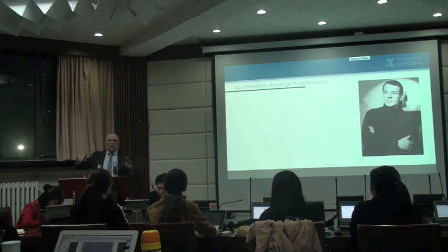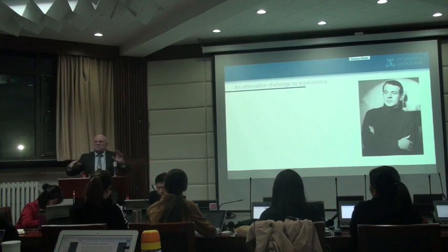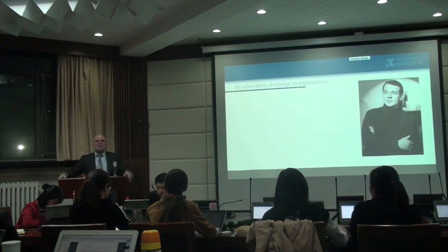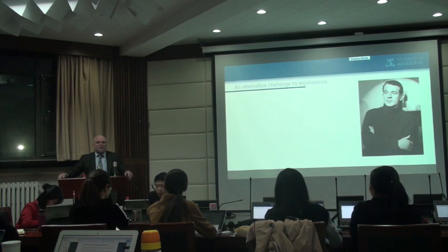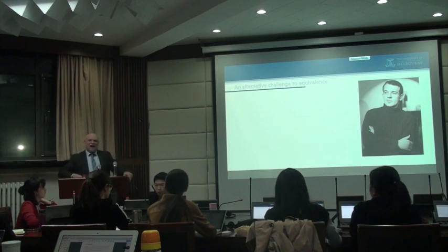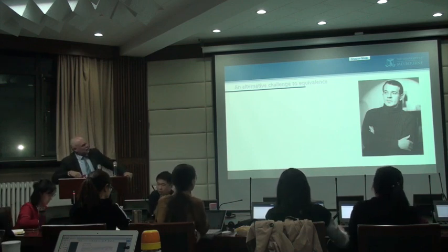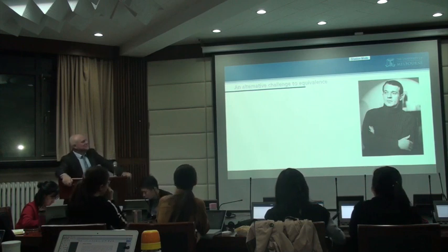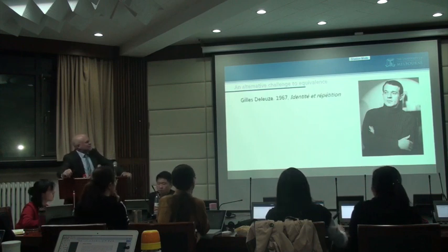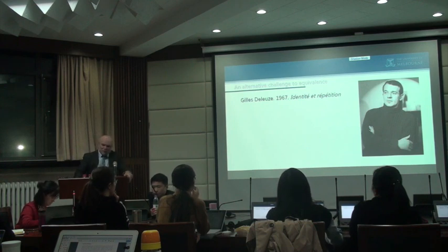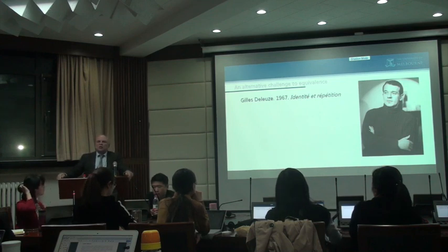Now remember I was going to talk about machine translation — I'm going to get to that. That was just a bit of history of translation theory. I now want to talk about the background philosophy: what was happening in philosophy while all that was going on. That man is Gilles Deleuze, pictured young. In 1967 he wrote a book — one of a number — which was questioning the search for certainty.